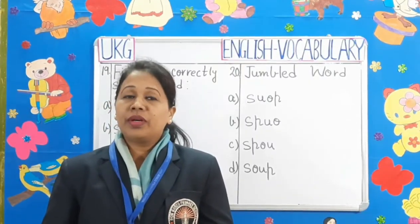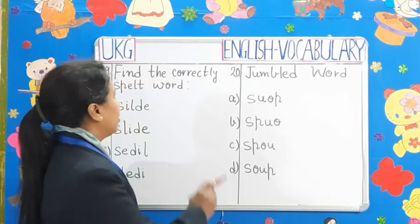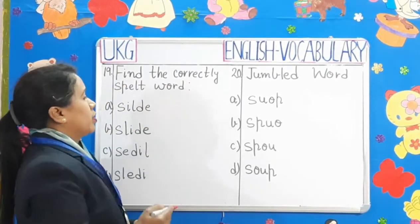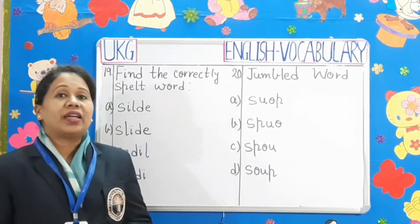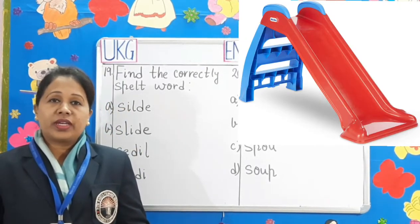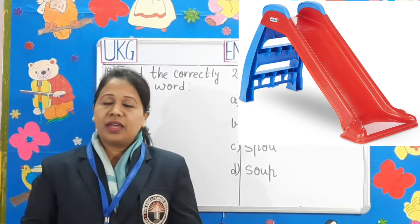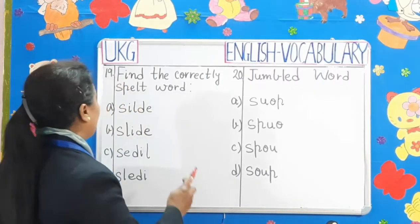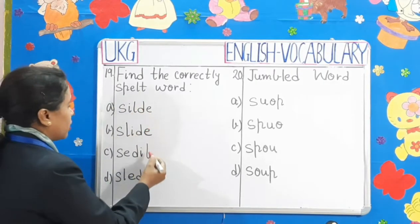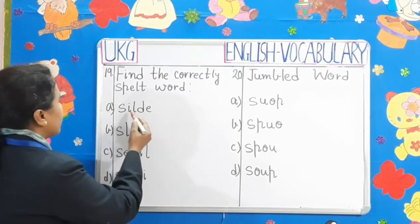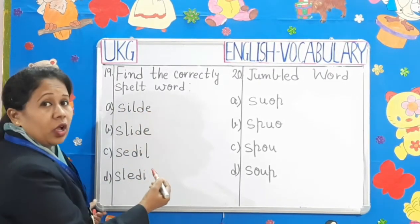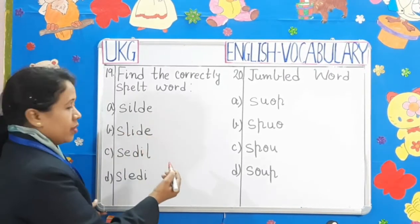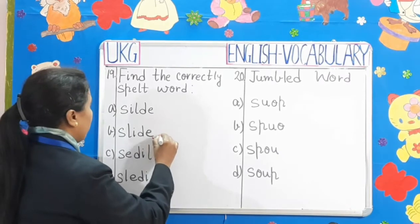Question number 19: Find the correctly spelt word. Children, here we have another picture. Can you recognize what is it? Yes, it is a picture of a slide. Now, let's select the correct spelling of slide. S-I-L-D-E — no. S-L-I-D-E — yes. It is the correct spelling of slide.